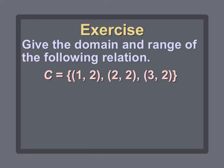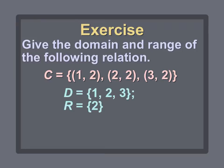Next problem: we want the domain and range of relation C. Relation C has ordered pairs (1,2), (2,2), and (3,2). The domain D equals all X values: 1, 2, and 3. For my range, I have Y values of 2, 2, and 2 — but I'm not going to write 2 three different times. My range is just {2}.